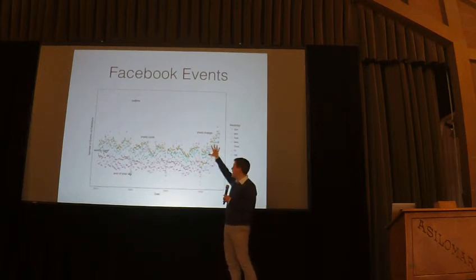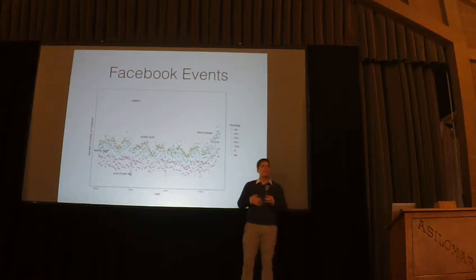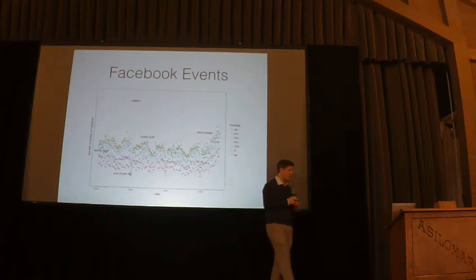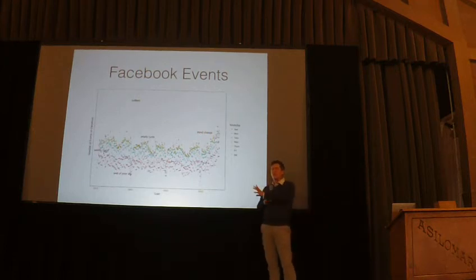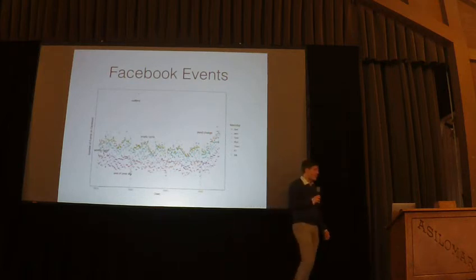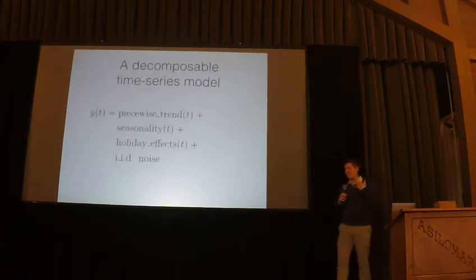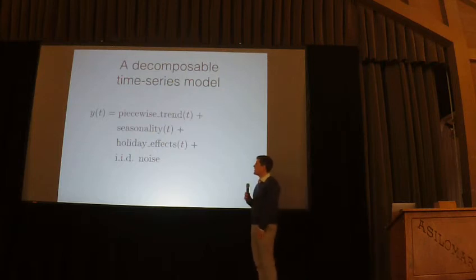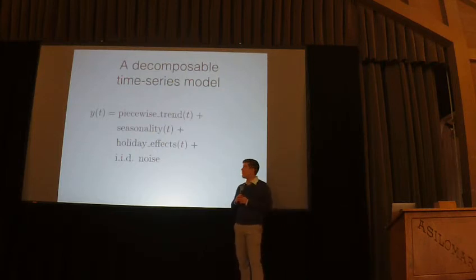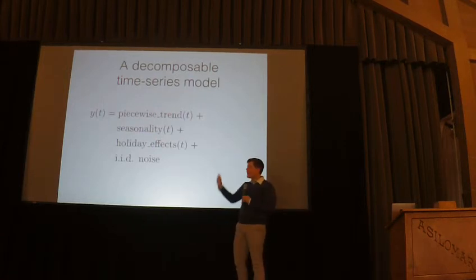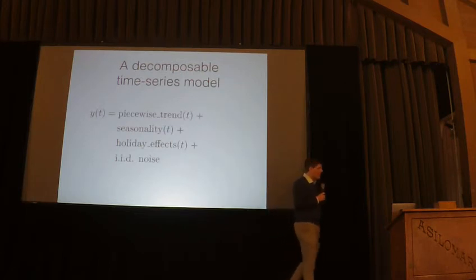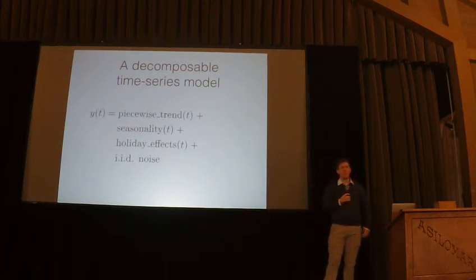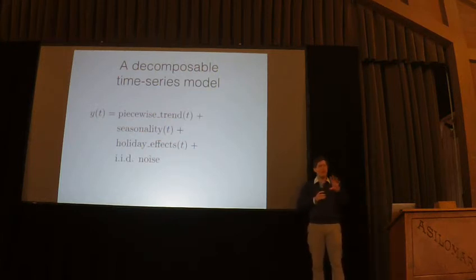This time series was generated by people doing things — logging into Facebook and creating an event. The things that people do are heavily influenced by time of year, whether it's a holiday, and what day of the week it is. So any time series generated by people doing things is likely to have these types of features. Prophet is a model designed around exactly these features — meant to work well for time series with multiple seasonalities, strong holiday effects, and piecewise trends, because that's a really common use case not well supported by current methods.